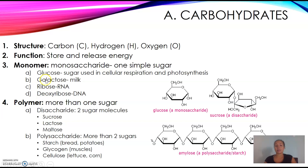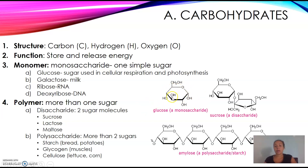There are four types of monosaccharides. You have glucose, the main sugar used in cellular respiration and photosynthesis. Galactose, which is in milk. Ribose, found in RNA, and deoxyribose in DNA. If you take a look over here, the monomer will look like this — it has this ring shape always. So if you see this shape, it is a simple sugar or a monosaccharide.